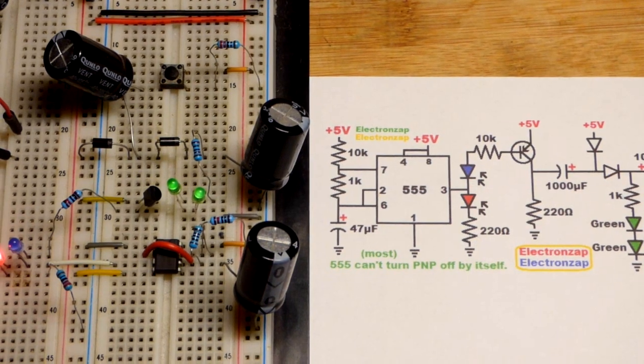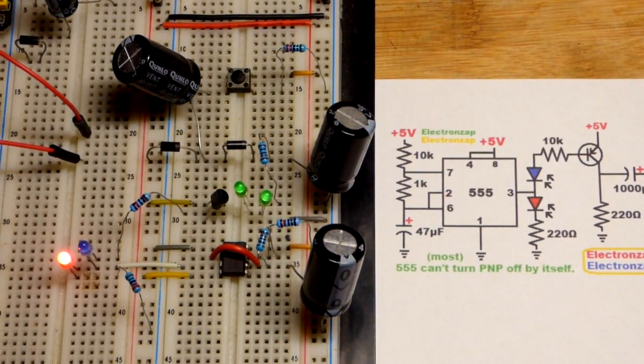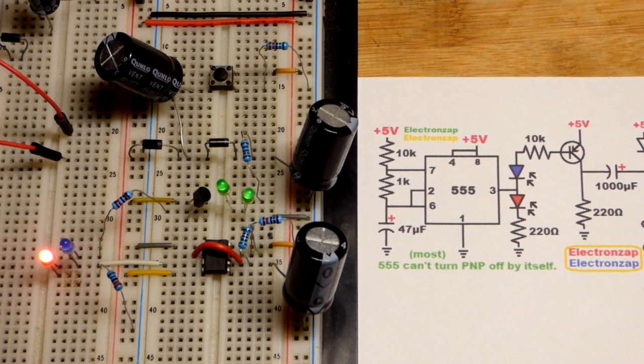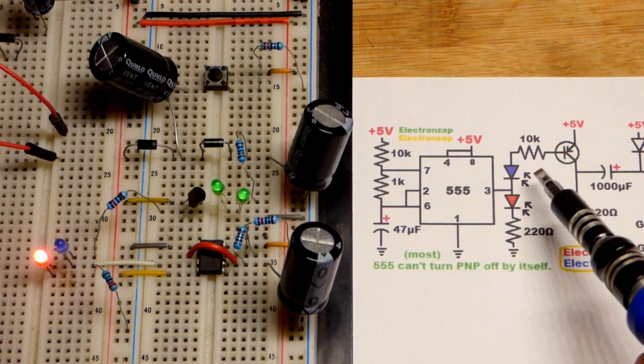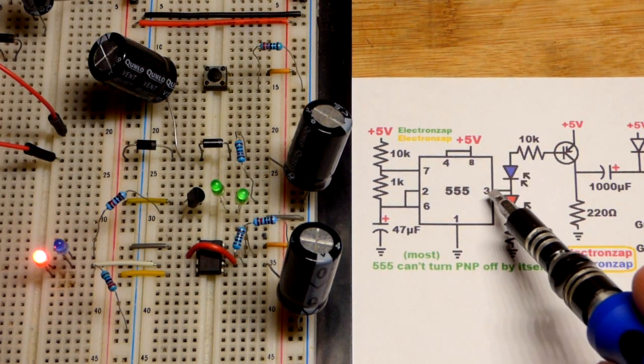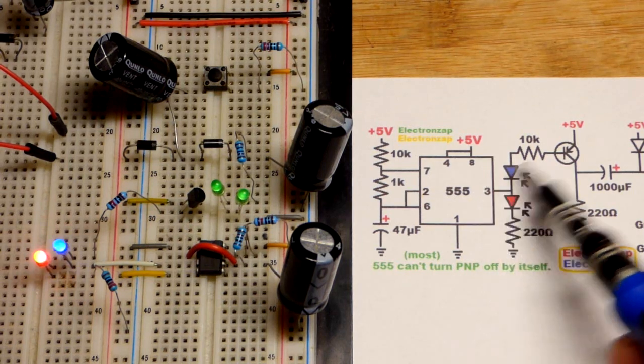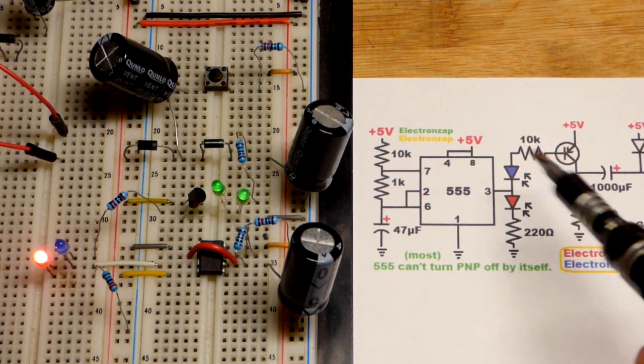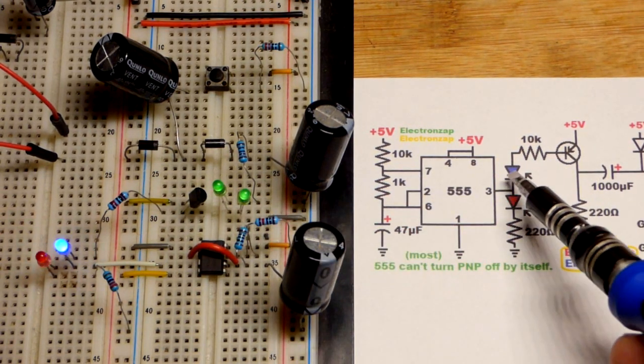Along the base though now we have the blue LED so it's dropping about 3 volts from that 2.5 at least and so it's blocking that voltage difference so the voltage can get low enough now to fully turn off the PNP bipolar junction transistor.